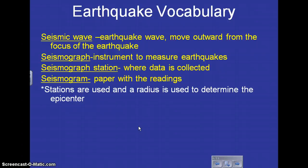A seismic wave is an earthquake wave, and they usually move outward from the place where that movement occurs, and they call that the focus. A seismograph is the type of instrument that measures earthquakes. A seismograph station would be where they have all those instruments stored and where they do that work. A seismogram would be the paper just coming out of that machine.